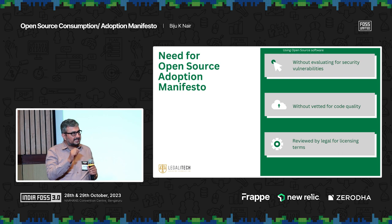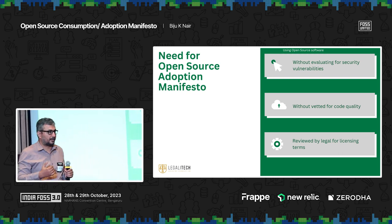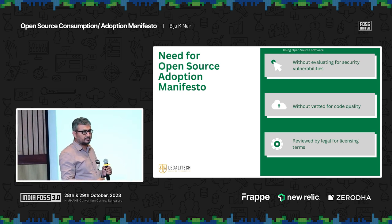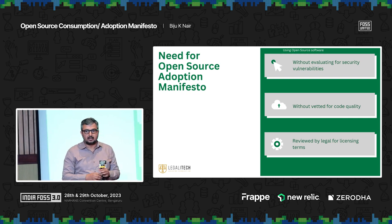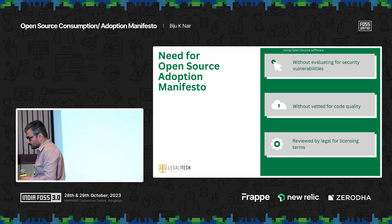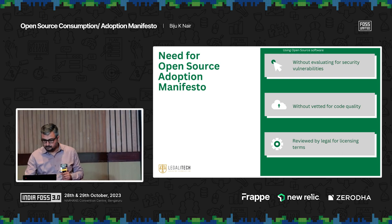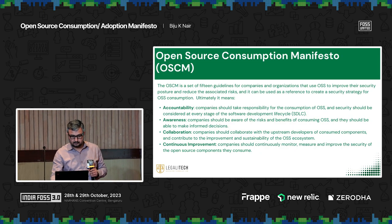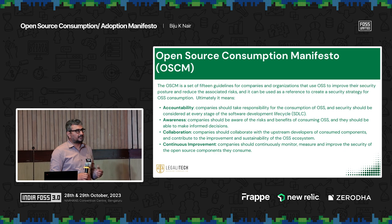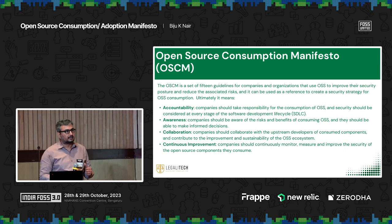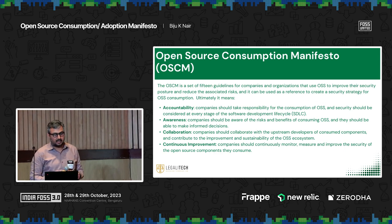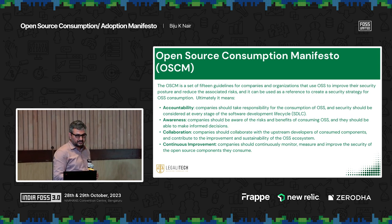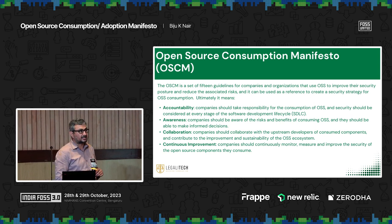When a downstream user looks at a piece of code with no license information and no copyright information, he feels there is no obligation for him. So it is important that each of us — whenever we are adopting, whether you are a project, a company, or an individual contributor — please look into all these issues. The open source consumption manifesto helps in accountability, creates awareness, there is collaboration, and there is continuous improvement.